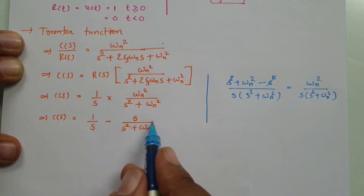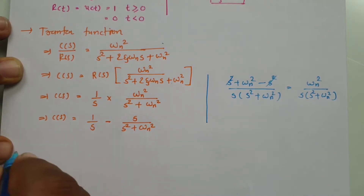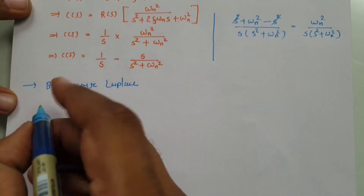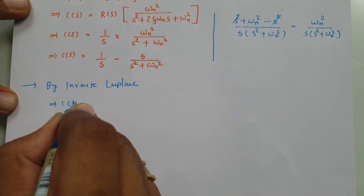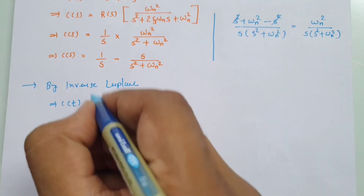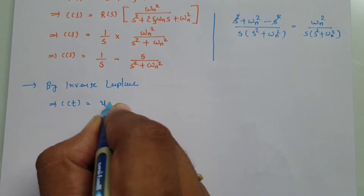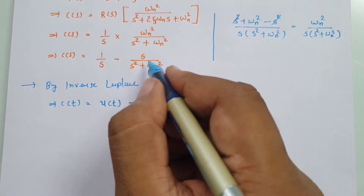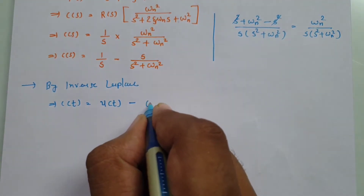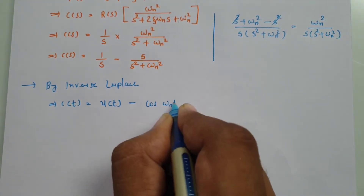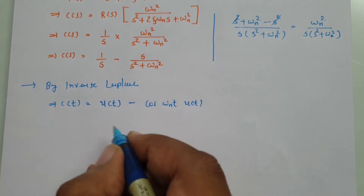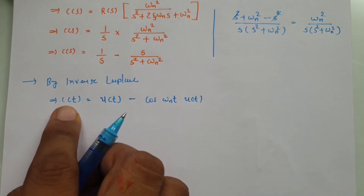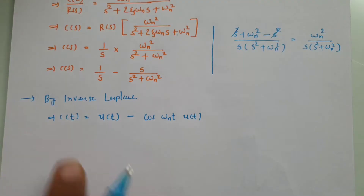We can now separate this to apply the inverse Laplace transform. Applying inverse Laplace, the term 1 by s gives u(t), and the term s divided by (s squared plus omega_n squared) gives cos(omega_n t). So c(t) equals u(t) minus cos(omega_n t) times u(t). That is our time domain output when the input is unit step.